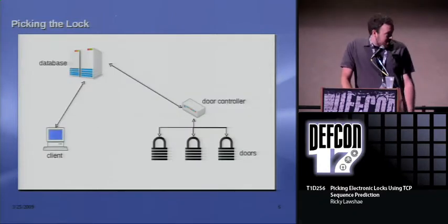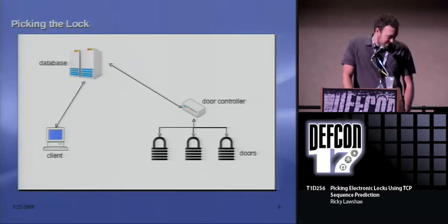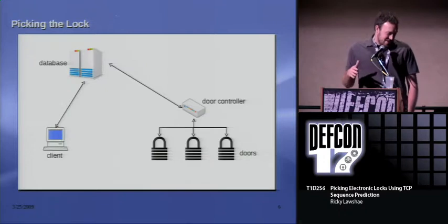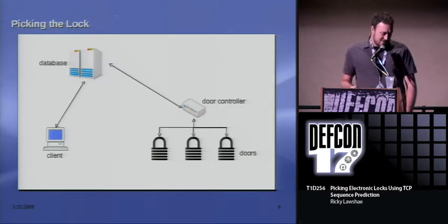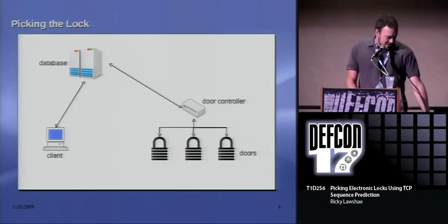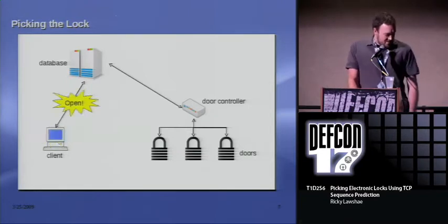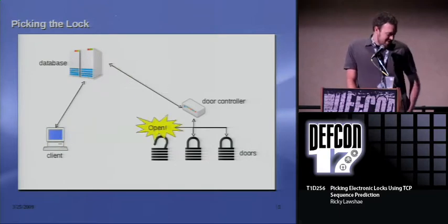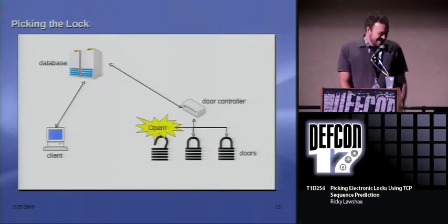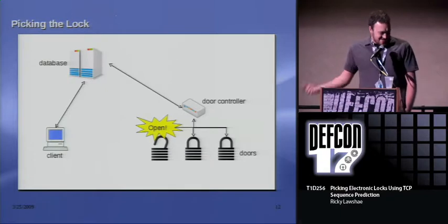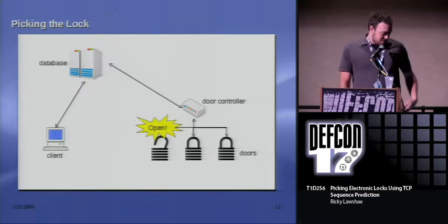This is the part where I start using goofy diagrams to illustrate my points. You've got your client that's connected to a database, that's connected to a door controller, that's connected to some doors. So the client says 'I want to open a door.' The open command goes through the database, the database sends it to the appropriate door controller, and the door controller opens the door.